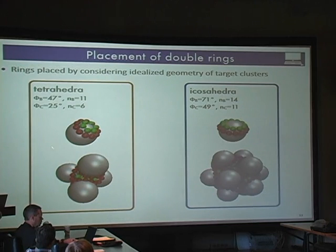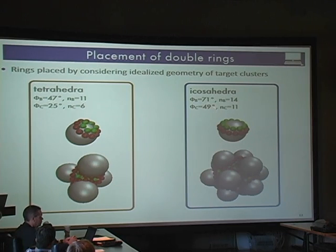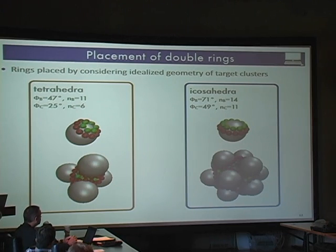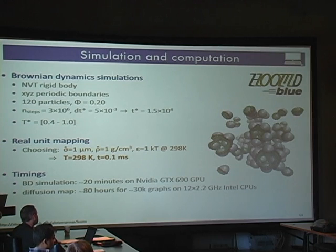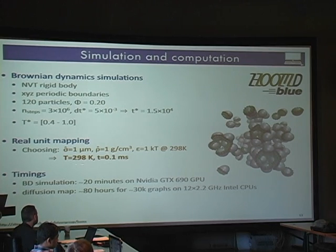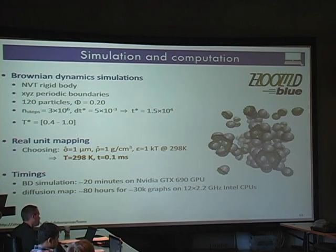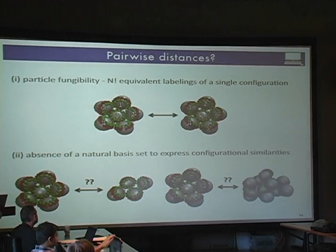We designed two particles: one we thought would assemble tetrahedra and one we thought would assemble icosahedra, just by geometric arguments of where we place the patches. I'll tell you about the icosahedra today. We run Brownian dynamics simulations with Weeks-Chandler-Andersen and specific Lennard-Jones potentials. T equals one in reduced units corresponds to 298 Kelvin, and T* equals one is roughly 1.1 microseconds, so we're in the millisecond regime at lab temperatures. The diffusion map requires pairwise distances — for proteins RMSD is a good choice, but for clustering anisotropic particles, you have a problem.